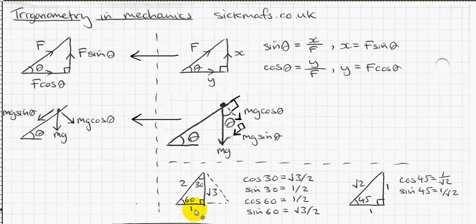Cos 60 is adjacent over hypotenuse, which is half. So cos 60 equals half. Sin 60 is the opposite over hypotenuse, which is root 3 over 2. So sin 60 is root 3 over 2.